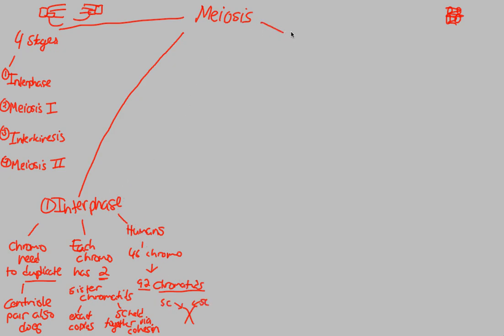Moving forward, we can now begin talking about meiosis I. In this video, we're going to focus on prophase I, because this is literally the most important part of meiosis. This is where many important events occur. Prophase I is the defining moment of meiosis — where the things meiosis is all about happen.